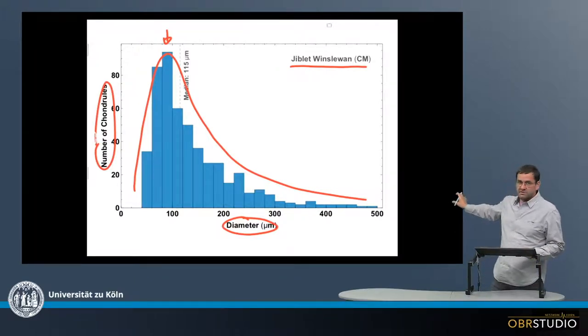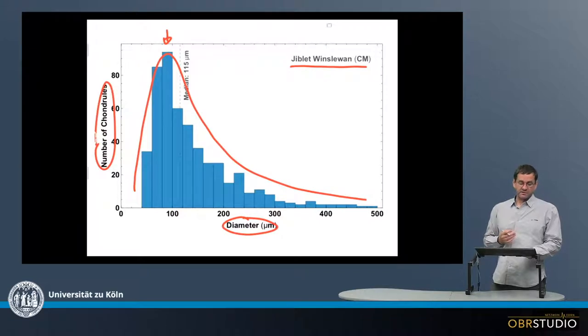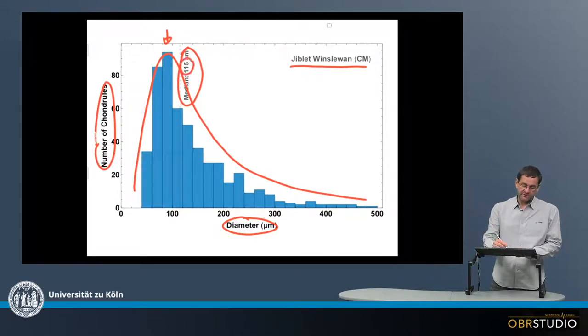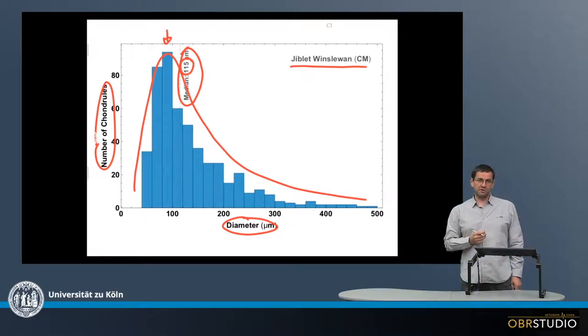In some cases there might be some chondrules with larger sizes, but this would be only a very small peak, not a real bimodal peak or something like this. Further, this distribution has a mean or average value, and in this case for the CMs it is 150 micron. CMs have quite small chondrules.